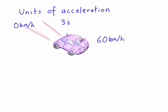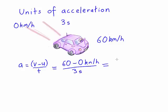In this case, I could calculate the acceleration using the normal formula. The acceleration equals the final velocity minus the initial velocity divided by the time. So substituting in the numbers gives 60 km an hour minus 0 km an hour, all divided by 3 seconds, equals 20 km per hour per second.